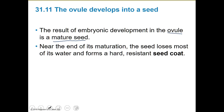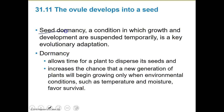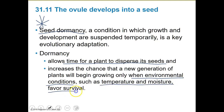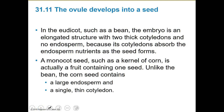Near the end of its maturation, the seed loses most of its water and forms a hard, resistant seed coat — seed dormancy. Dormancy is a condition in which growth and development are suspended temporarily, and it's a key evolutionary adaptation. Dormancy allows time for the plant to disperse the seeds and increases the chance that a new generation will begin growing when environmental conditions like temperature and moisture favor survival. They can just wait it out — it's like a pause button until conditions are right, similar to what we saw with latent viruses and the lysogenic cycle.